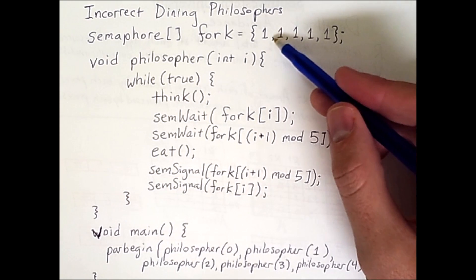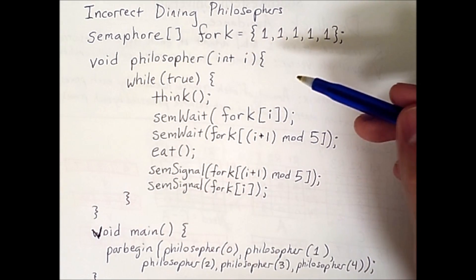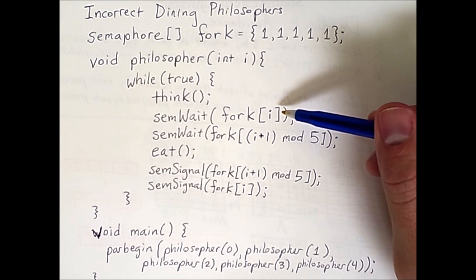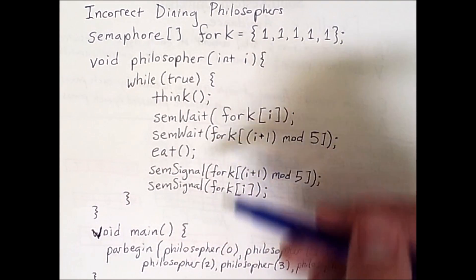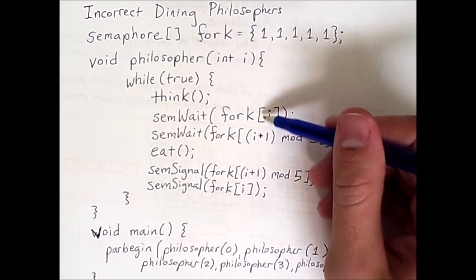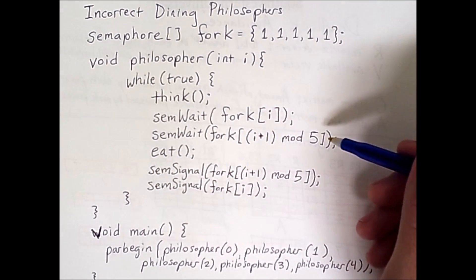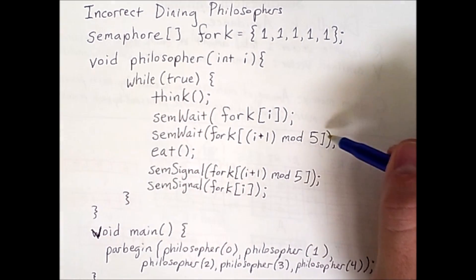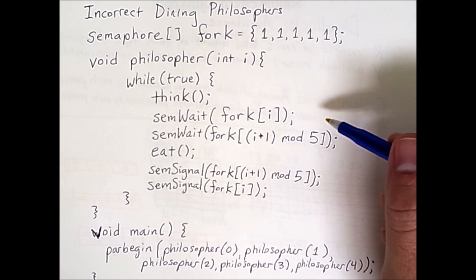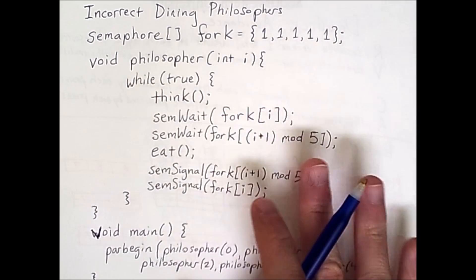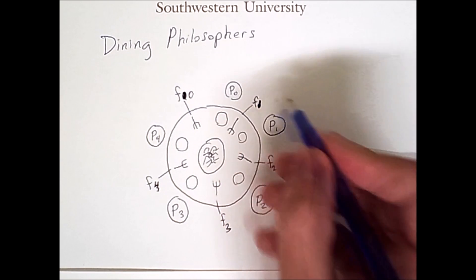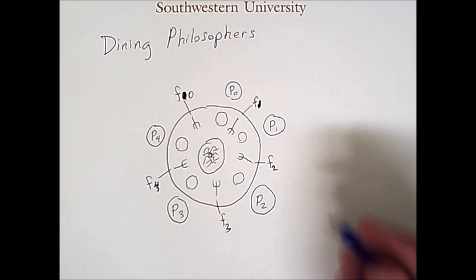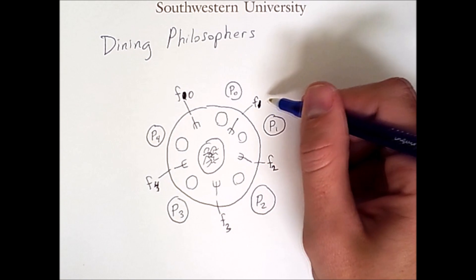Sem wait means that the semaphore at that particular index is decremented, so the philosopher is claiming that specific fork. The fork that is claimed is defined in terms of i. The philosophers are numbered 0 through 4, and so philosopher 0 is going to claim first fork 0, and then fork 0 plus 1 mod 5. For philosopher 0, we need forks 0 and 1, and if we look at the diagram, that's what we see. Philosopher 0 has fork 0 on one side and fork 1 on the other. Similarly, philosopher 1 would need fork 1 and fork 1 plus 1 mod 5, which is 2.